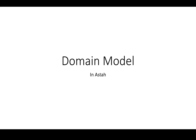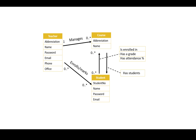I have a domain model here. This is from my own example case where teachers can create courses and assign students to those courses, and students can have grades and attendance and so on. So this is my domain model. There's a teacher with some attributes: an abbreviation — for example, my own is TRMO — a name, a password to login, email, phone, and some office. And the teacher manages courses.